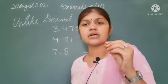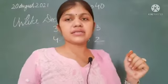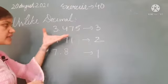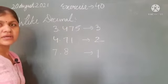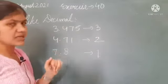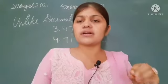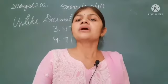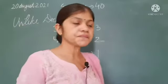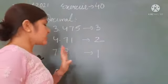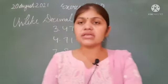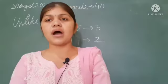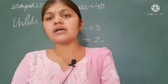Now there is another important result. We have to use this property to change unlike decimals into like decimals. The property is: by putting any number of zeros on the extreme right of the decimal part, the value of the given number does not change.